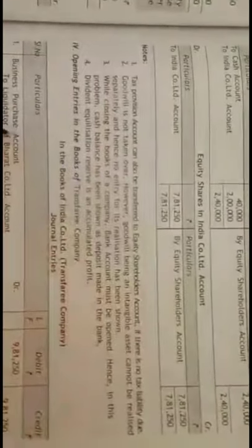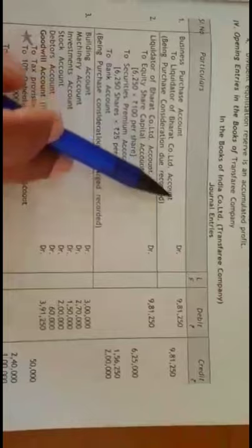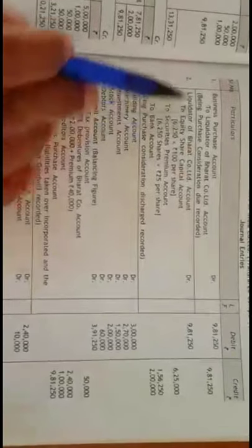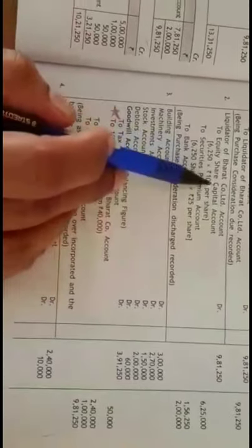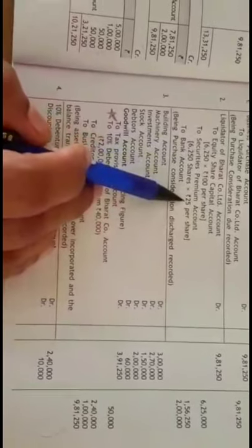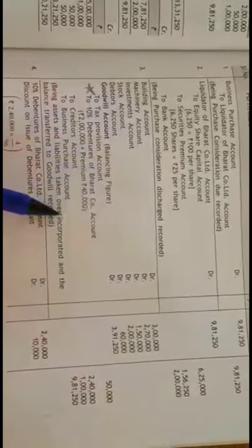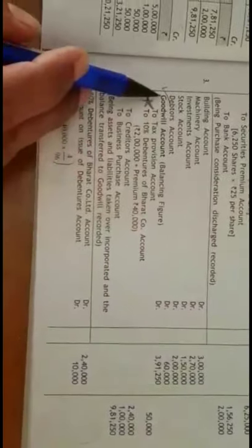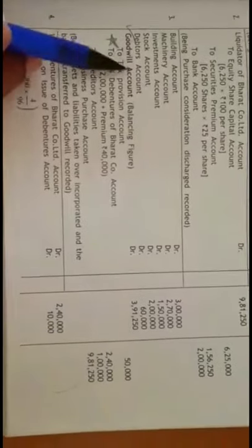Moving on to the opening entries in the books of the purchasing company. For PC due: business purchase account debit to liquidator of Bharat Company Limited account. For PC payment, PC is paid in shares and cash: liquidator of Bharat Company account debit to equity share capital (face value rupees 100, premium rupees 25 split separately) and to bank account two lakh. For incorporation of assets and liabilities, all assets are transferred — assets account debit; liabilities taken over credited. The balancing figure goes to goodwill or capital reserve account.